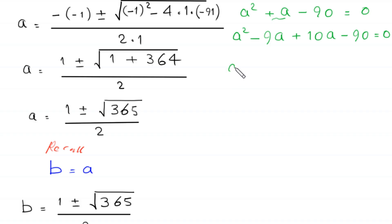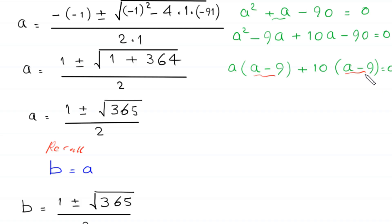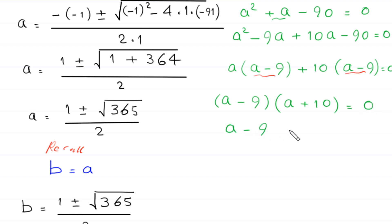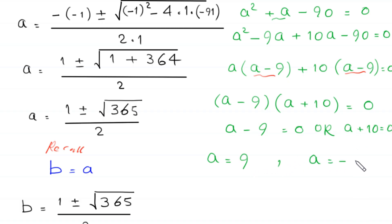This is a quadratic equation and is factorable. We split plus a as negative 9a plus 10a, giving a squared minus 9a plus 10a minus 90 equals 0. Factoring, we get a(a minus 9) plus 10(a minus 9) equals 0, so (a minus 9)(a plus 10) equals 0. Therefore, either a minus 9 equals 0, giving a equals 9, or a plus 10 equals 0, giving a equals negative 10.